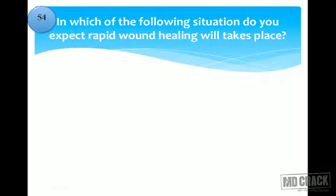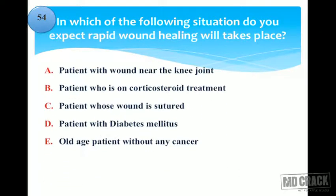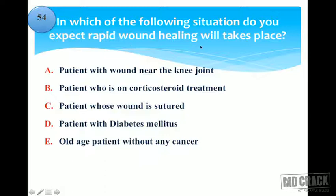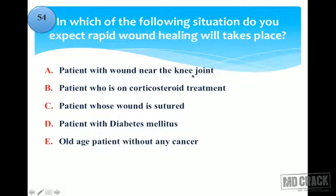In which situation do you expect rapid wound healing? Options include: patient with wound near the knee joint; patient on corticosteroid treatment; patient whose wound is sutured; patient with diabetes; old age patient; patient without any cancer. A wound near a joint — any movable joint — hampers the wound healing process, causing delayed healing.